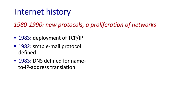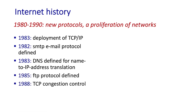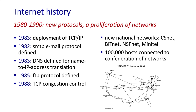SMTP and DNS are application layer protocols, so we'll study them in a lot of detail when we get to the next chapter. In the late 1980s, important extensions were made to TCP to implement host-based congestion control — that is, to allow a host to decrease its sending rate when it notices packet loss or packet delay due to congestion.